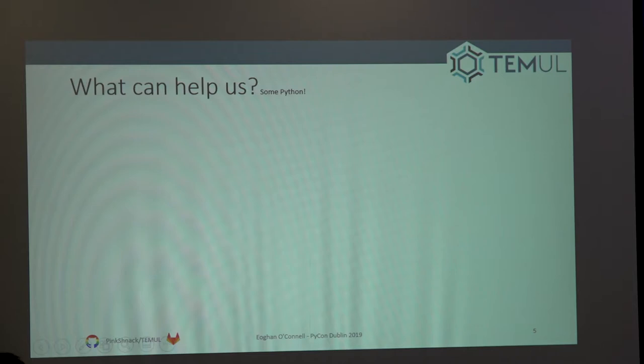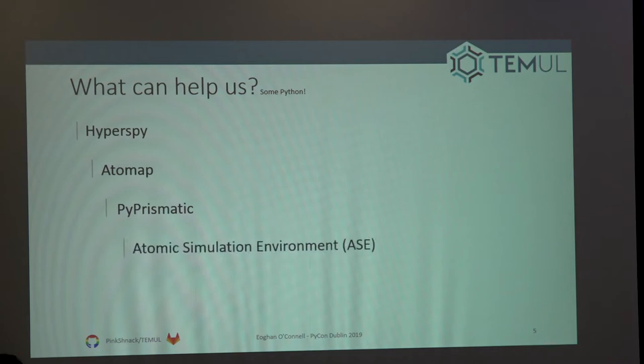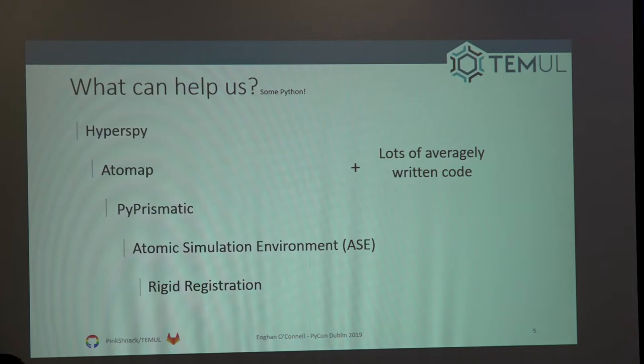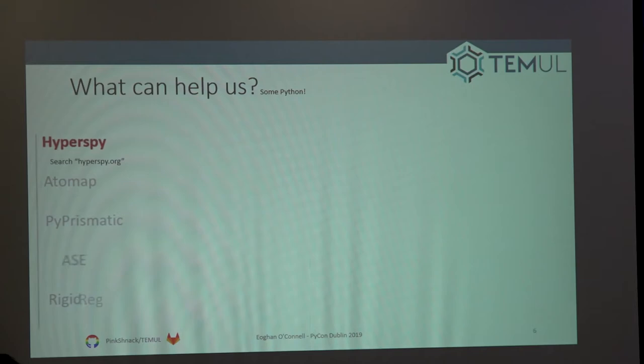What can help us analyze all this? Python can do it. In the last five or six years some great programs have come out in Python, especially HyperSpy, AtomAP, PyPrismatic, the Atomic Simulation Environment, and some image registration software. I'll go through these one by one — along with some code written by me. If you go to my GitHub you'll see a lot of dodgy while loops where I later realized I could use for loops — about 10,000 lines of code in total.